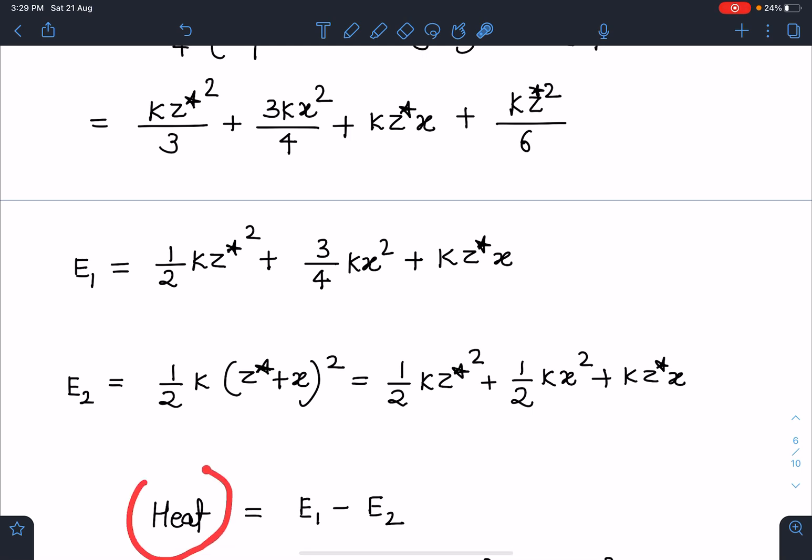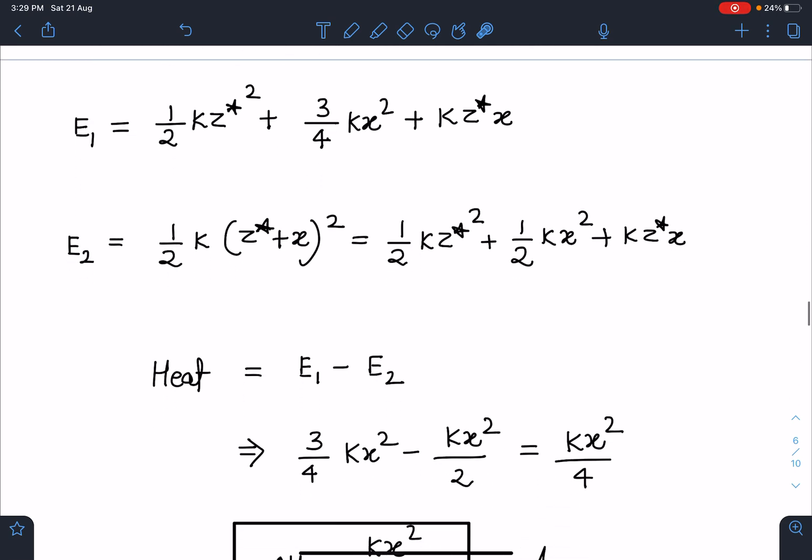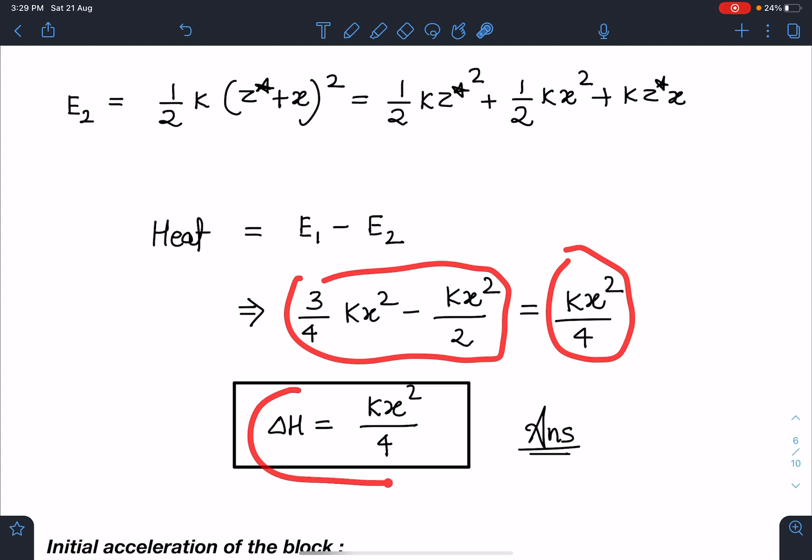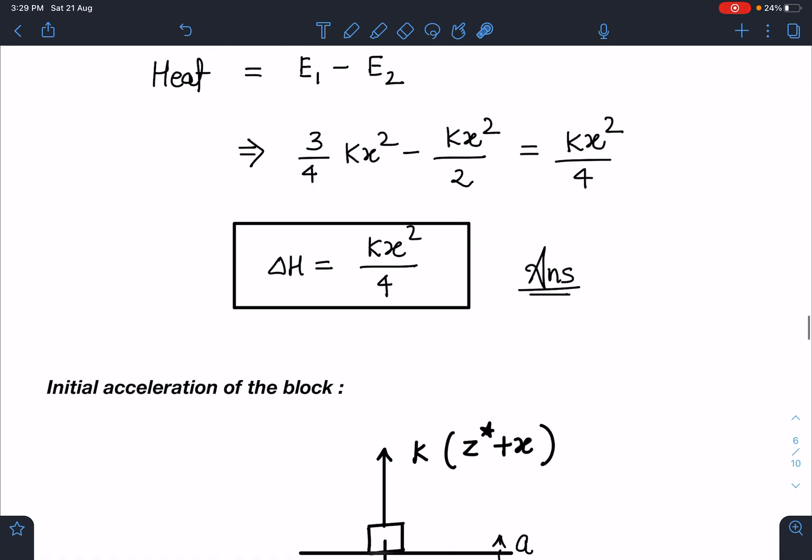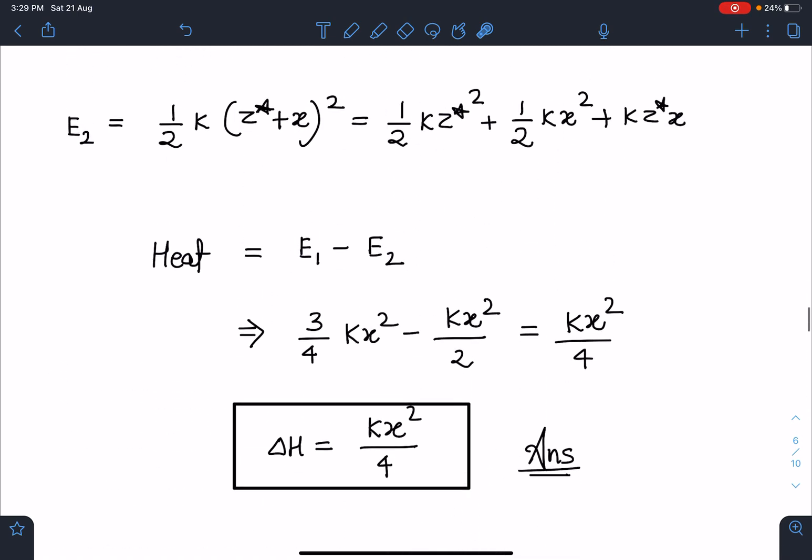When I take the difference, these two energies are not same. When I take the energy difference E₁ - E₂, I realize there is some loss in energy. This loss will come in the form of heat. When I subtract I get kx²/4. So the heat generated is kx²/4. This is the answer. I hope you have enjoyed this problem and there must be something new for you, because these are not traditional problems you don't get in JEE books. But such type of questions can definitely come in JEE Advanced exam.